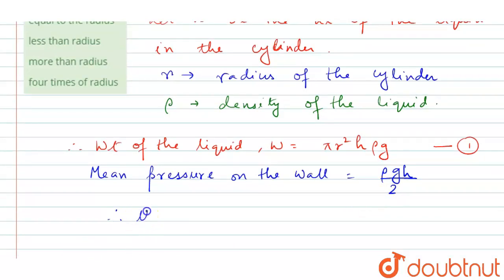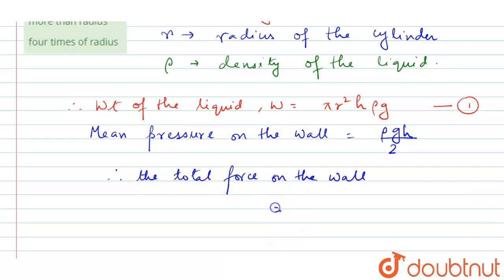The total force on the wall is equal to 2π r h into half ρ g h.